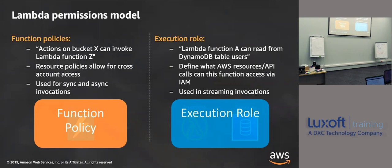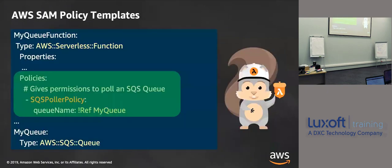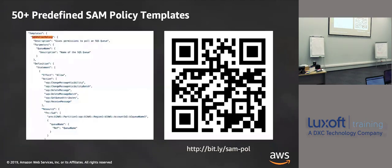Lambda permissions model — the basic idea is understanding the function policy and the execution role. SAM template policies: you can apply managed policies. This is the page I was talking about — if you plan on doing serverless, very helpful. This is a whole list of managed policies you can use from within SAM. Rather than writing your own policies, if you do it this way you have a lot of control over passing parameters. Each one gives an example of how it's done. This one, for example, is the SQS Poller Policy.